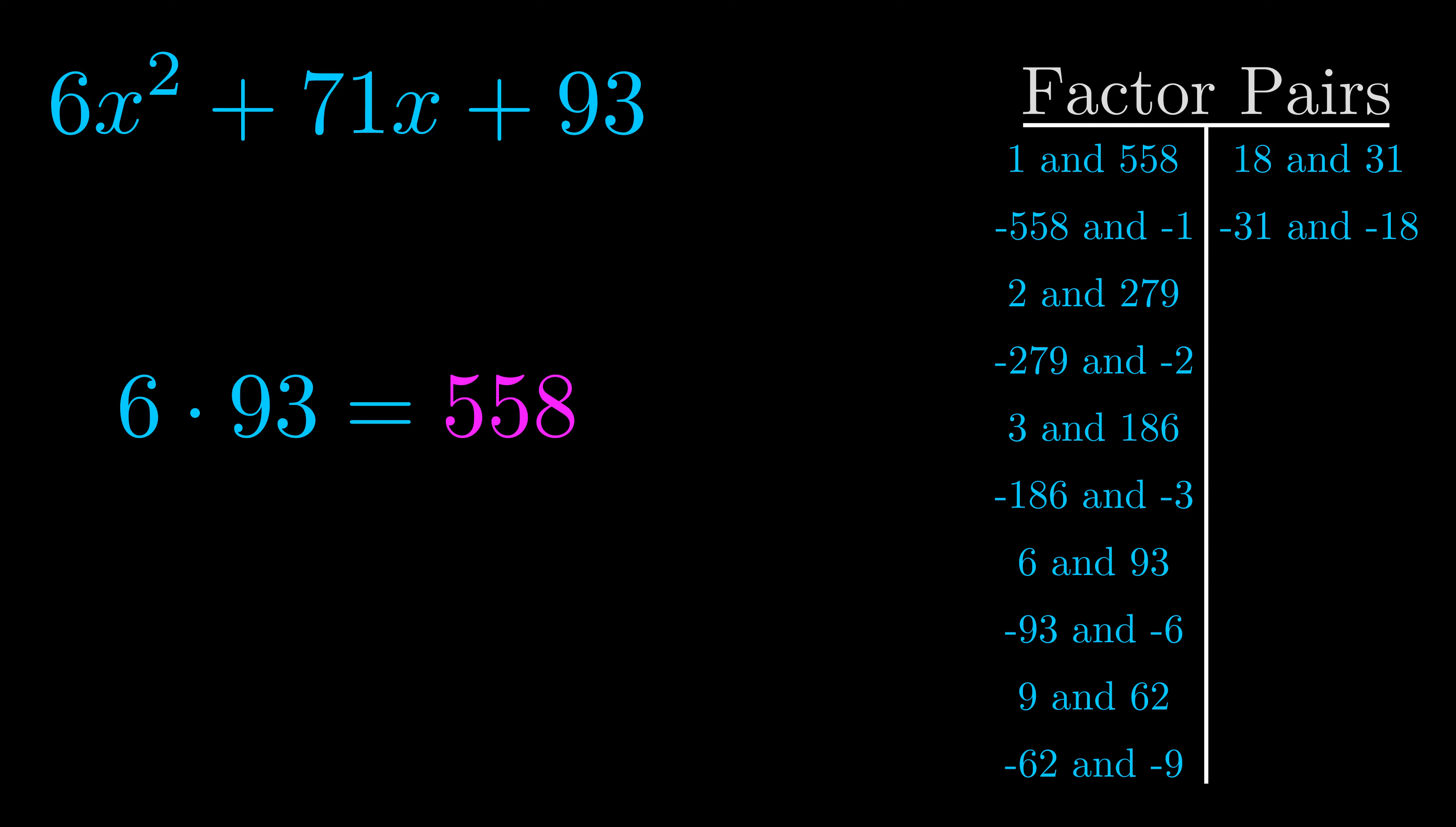Now once you have these factor pairs, the goal is to find which of these pairs adds to the b value. The b value is the coefficient on the x term.